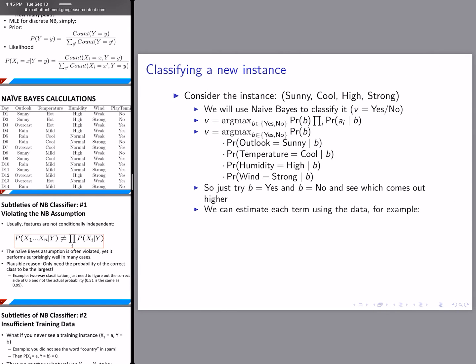Each of these terms — probability of b, probability of outlook equal to sunny given b, probability of temperature equal to cool given b, probability of humidity equal to high given b, and probability of wind equal to strong given b — can all be estimated using the training data on the left.